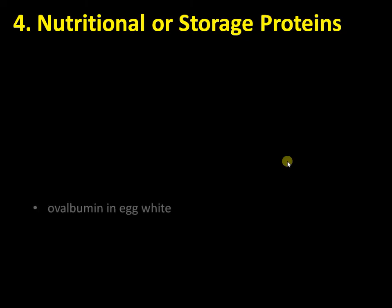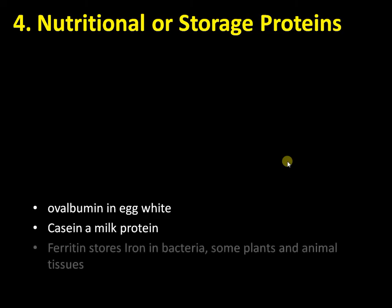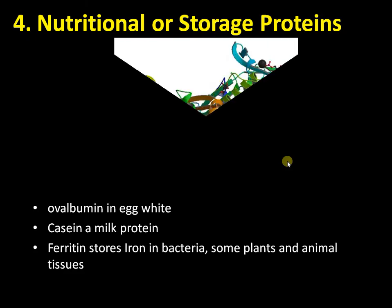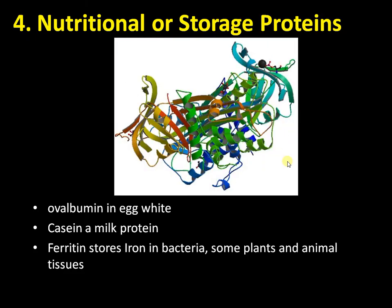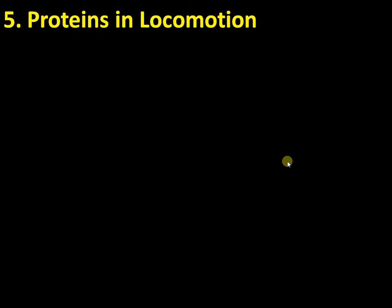The fourth important function of proteins is storage. Storage proteins include albumin in egg white, casein which is a milk protein, and ferritin which is a storage protein present in bacteria. This is the structure of albumin.